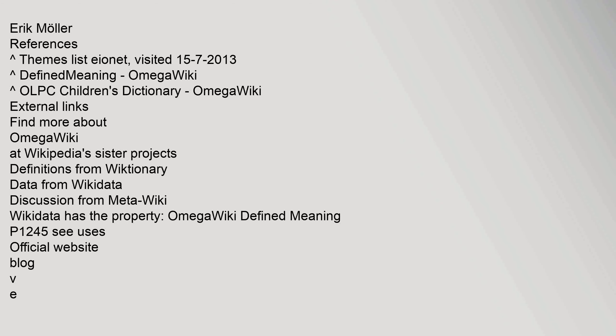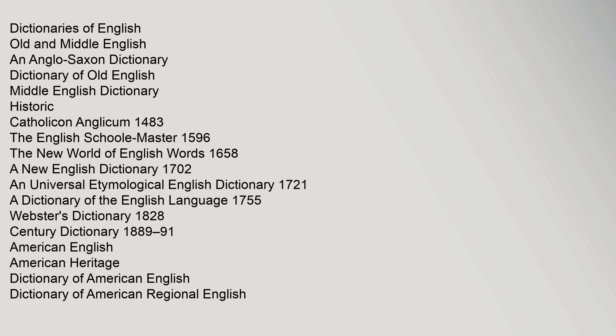See also: Eric Mahler. References: Carrot Themes List Eonet, visited the 15th of July 2013. Carrot Define meaning, OmegaWiki. Carrot OLPC Children's Dictionary, OmegaWiki. External links: Find more about OmegaWiki at Wikipedia's sister projects — Definitions from Wiktionary, data from Wikidata, Discussion from MetaWiki. Wikidata has the property OmegaWiki defined meaning P1245C. Official website, blog.